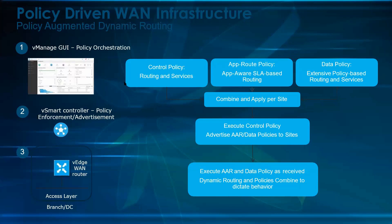In terms of how policy is managed: control policy handles routing and services. Then we have application-aware routing and data policy. We combine all of these into one consolidated policy and apply it per site — executing the control policy, advertising application-aware routing, and data policy to the site. AAR and data policies as received are combined with dynamic routing policies to dictate behavior.